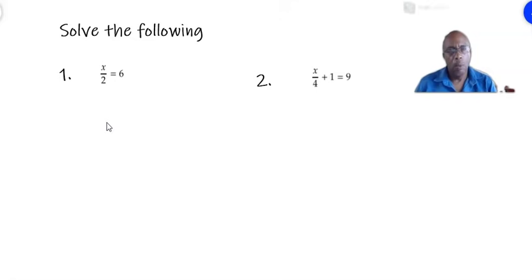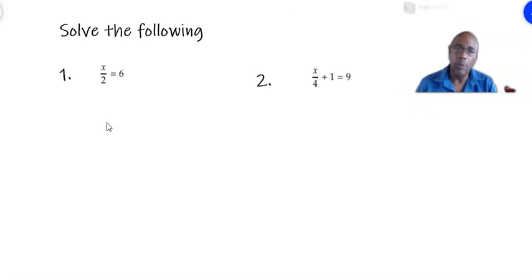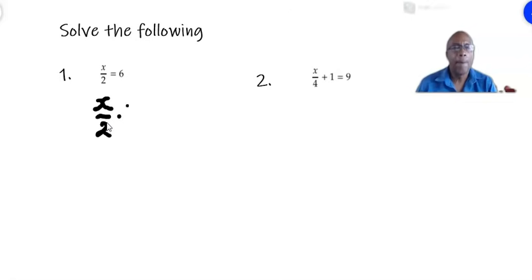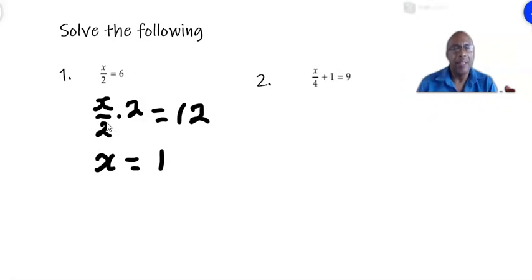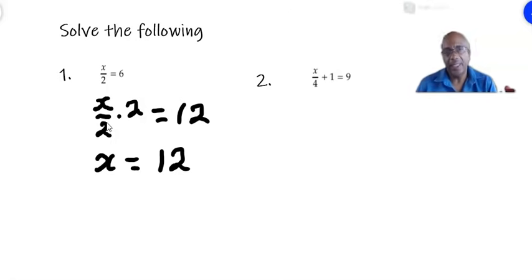In the first example we have to solve x over 2 equals 6. We are dividing x by 2 and the answer equals 6. In order to get x on the left side alone, we multiply both sides by 2. So x over 2 multiplied by 2 gives you x, and 6 times 2 is 12, so we are left with x equals 12. We can check: if x is 12, 12 divided by 2 is 6, so we know we are correct.